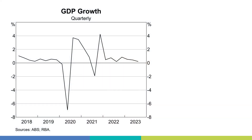Let's start by focusing on economic growth in Australia. Economic growth is measured by GDP and the black line shows the quarterly growth rate of Australia's GDP over the past few years.